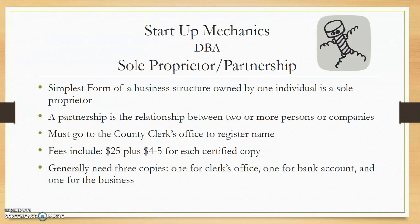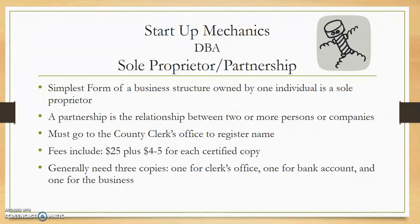The first one we're going to discuss is a sole proprietor as well as a partnership. A sole proprietor is one person owning the business. A partnership is two or more people owning the business. The simplest form of a business structure owned by one individual is a sole proprietor. In order to file, you must go to the county clerk's office to register the name. The fees include $25 plus another $4 or $5 for each certified copy.